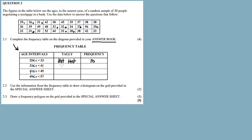For the remaining three groups, let me pause and count. I found that the frequency for the 33–41 age group is 13, for the 41–49 age group it's 4, and for the 49–57 age group it's 3. Now for question 2.2 — use the information from the frequency table to draw a histogram on the grid provided in the answer sheet.